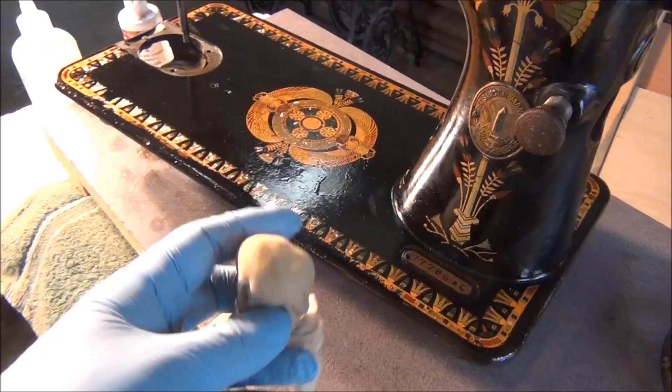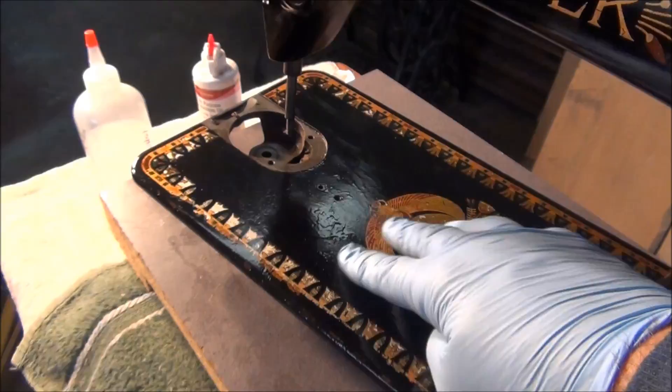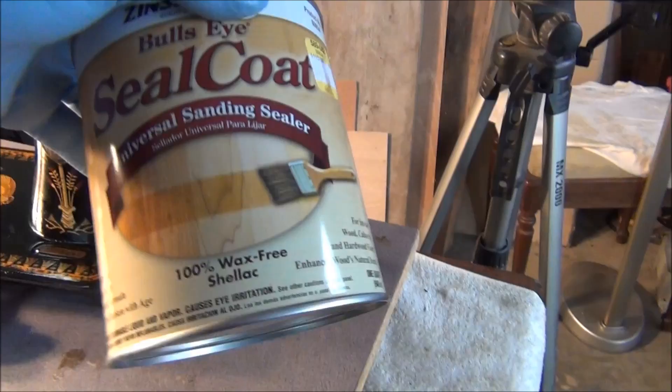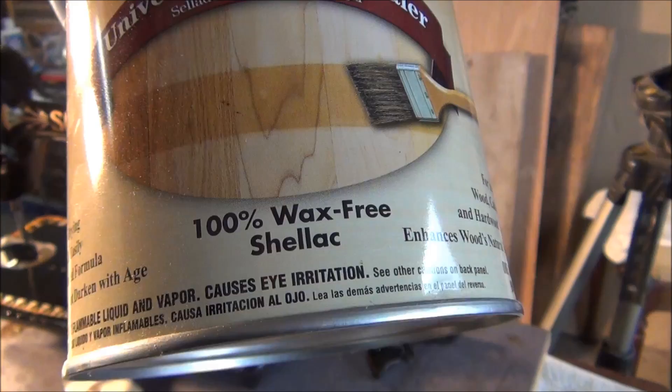I've got all my materials ready. I've got my little rubber and I cut it down to about the size of a quarter. Because once you're trying to work on the bed of the machine, you don't have a lot of space. I've got my can of shellac. It's just a seal coat. It's 100% wax free shellac.